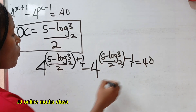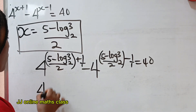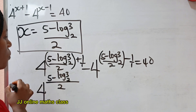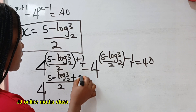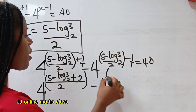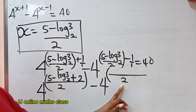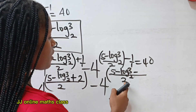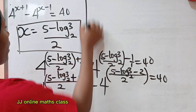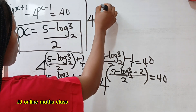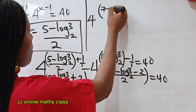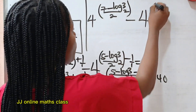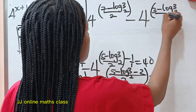The LCM of 2 and 1 is 2. For the first exponent: 5 minus log 3 base 2 plus 2 gives 7 minus log 3 base 2, all divided by 2. For the second exponent: 5 minus log 3 base 2 minus 2 gives 3 minus log 3 base 2, all divided by 2. So we have 4^((7 minus log 3 base 2)/2) minus 4^((3 minus log 3 base 2)/2) is equal to 40.